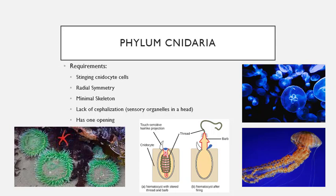With sea anemones, if you touch one, you can kind of feel it holding on to you, almost like Velcro — that's the nidocytes. With non-venomous jellies, you'll feel that as well, like it's attached like Velcro but not stinging you, because you're touching it with your fingers and we have really thick calloused skin on our hands. But if you lick a sea anemone, your tongue will actually become numb because the venom is getting through the thinner skin of your tongue. Those nidocyte cells aren't actually getting through your calloused hand skin — they're made to grab small fish and plankton, not a whole person.